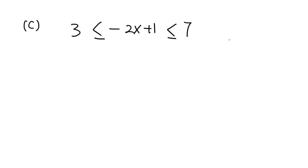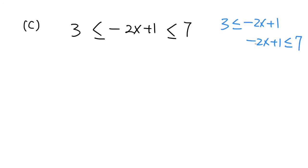Here we have another example. This is two inequalities connected with AND, and you can see this is a shorthand form. So 3 less than or equal to negative 2x plus 1 is one of the inequalities, and negative 2x plus 1 less than or equal to 7 is the other inequality. These two are connected with AND — AND is hidden in this shorthand form.